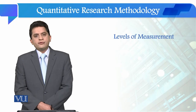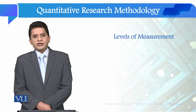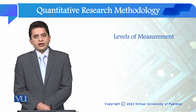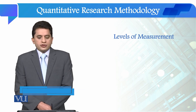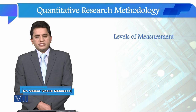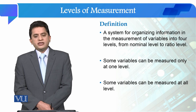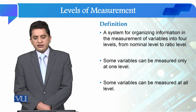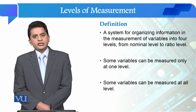Students, now we are going to study the levels of measurement. We have completed the literature review as a research process and now we are going to study how to measure the variable. A level of measurement is a system for organizing information in the measurement of variables into four levels, from nominal level to ratio level.